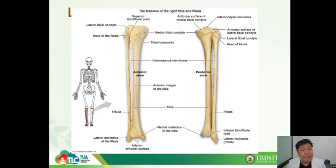Here is an image of our tibia and fibula. The tibia is the thicker bone, and the thinner, more lateral bone is the fibula.